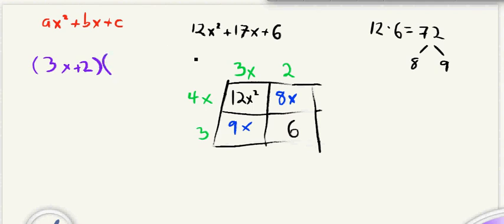And then the other thing in the parentheses of the factors is going to be what's on the side here. 4x and a positive 3 is going to give us 4x plus 3. And so to write 12x squared plus 17x plus 6 in factored form, it's going to be 3x plus 2 times 4x plus 3. And that's it.